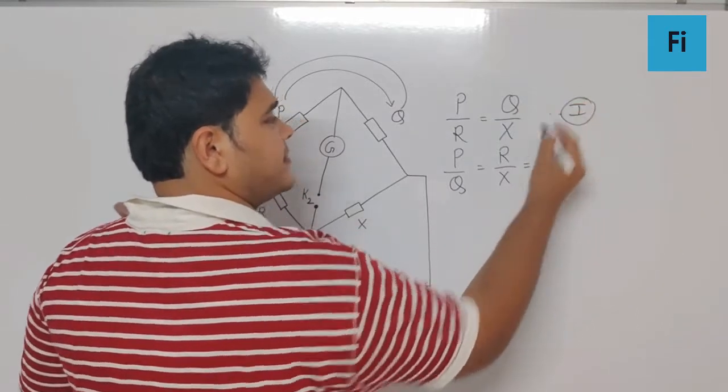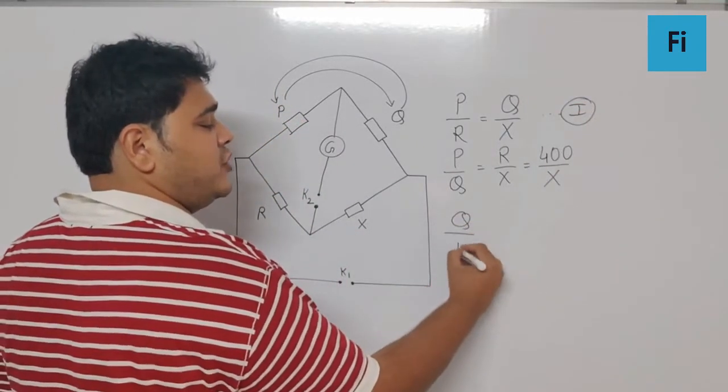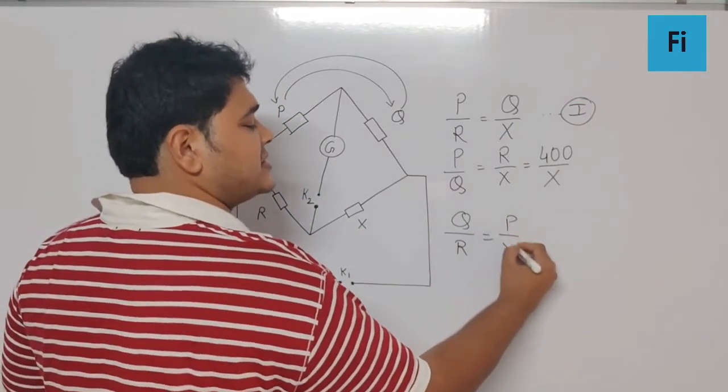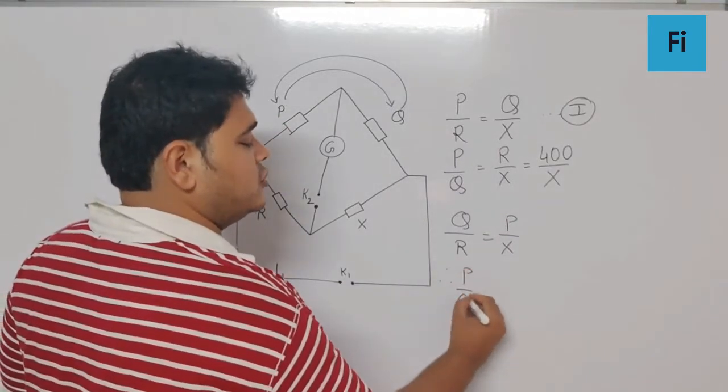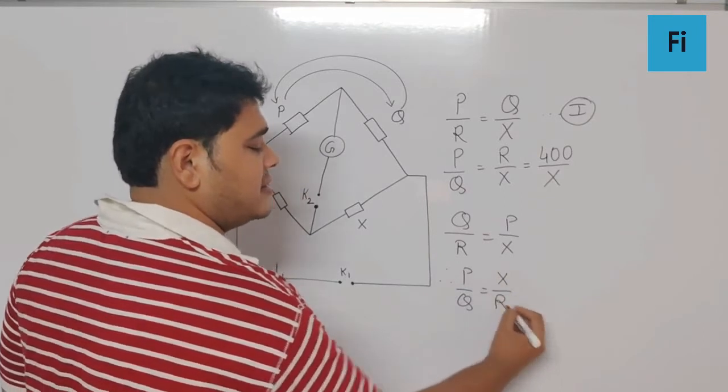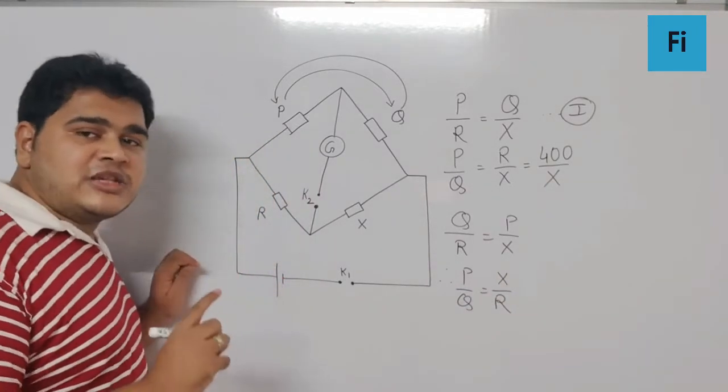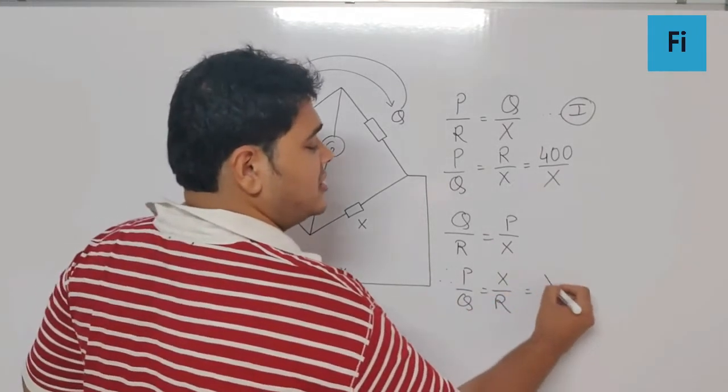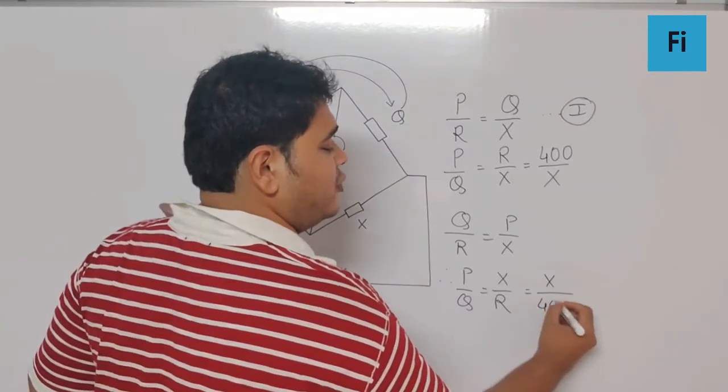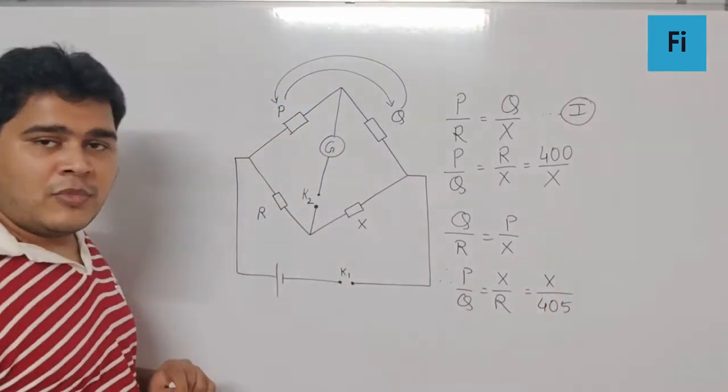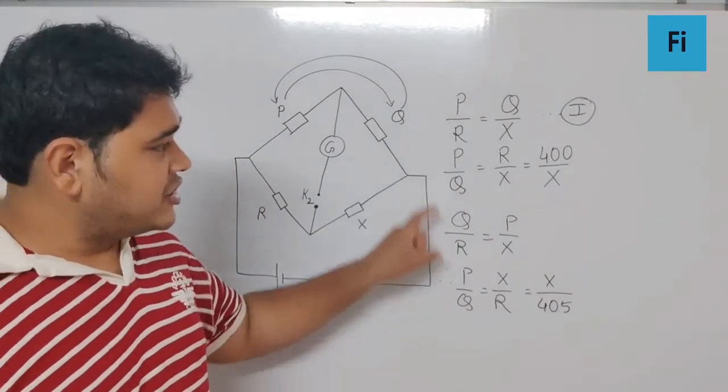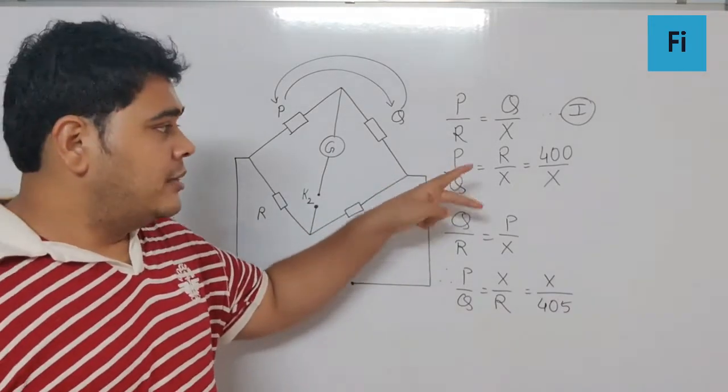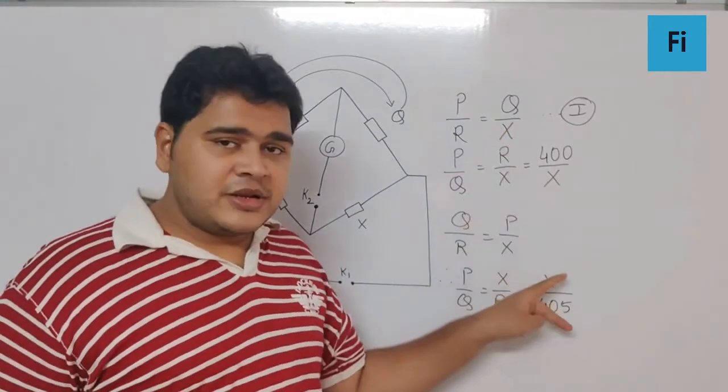For the second case, it will be Q by R equals P by X, and that means P by Q will be X by R. Therefore, in the second case to be balanced, they got the R value as 405. Now if you check both cases, you get the same ratio P by Q on the left-hand side, but on the right-hand side the ratios are different, so we can equate them.